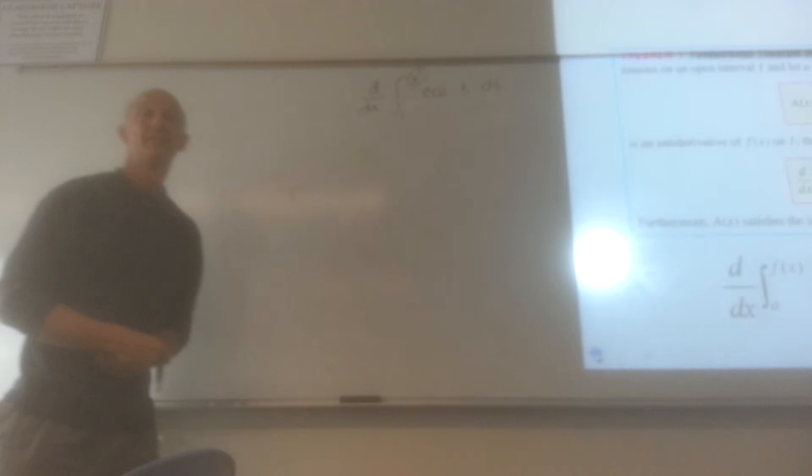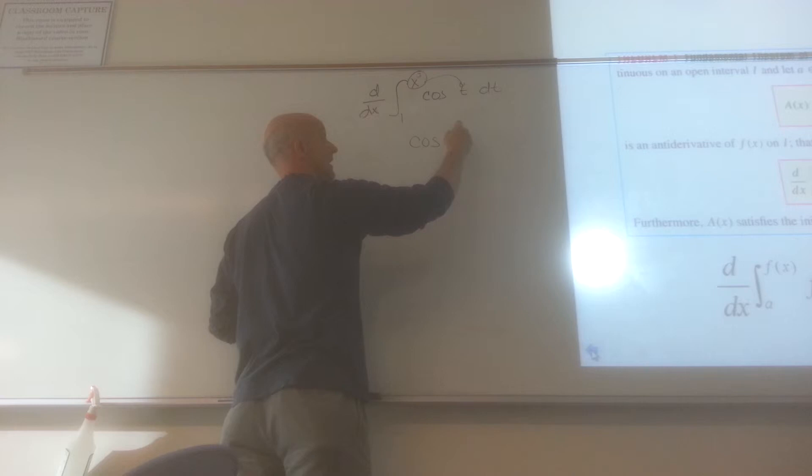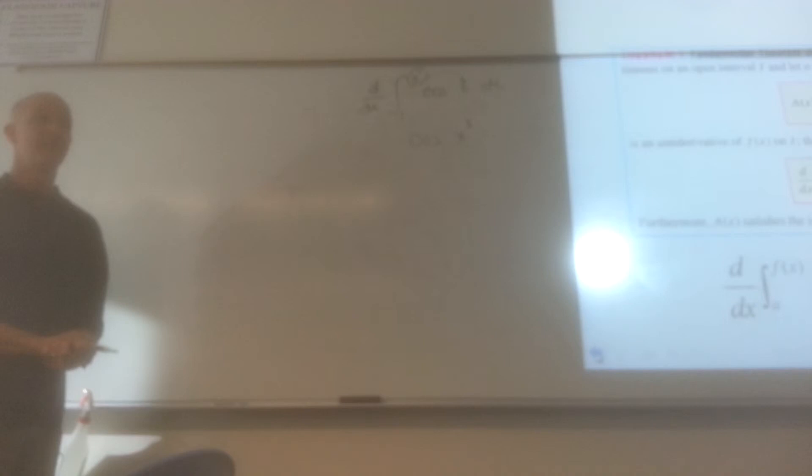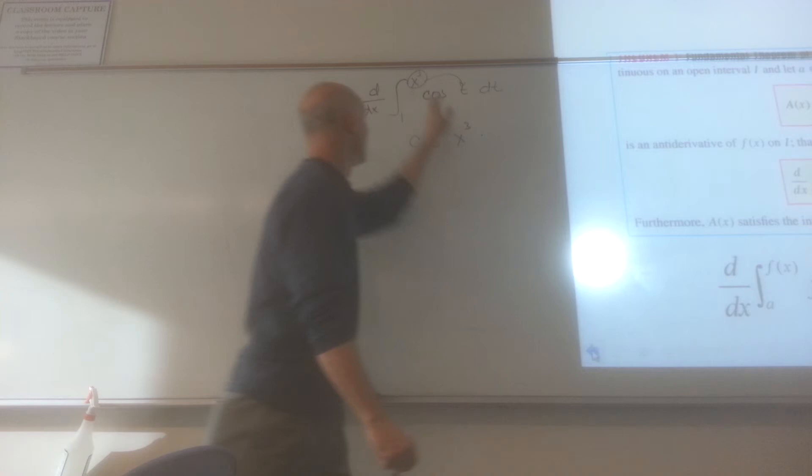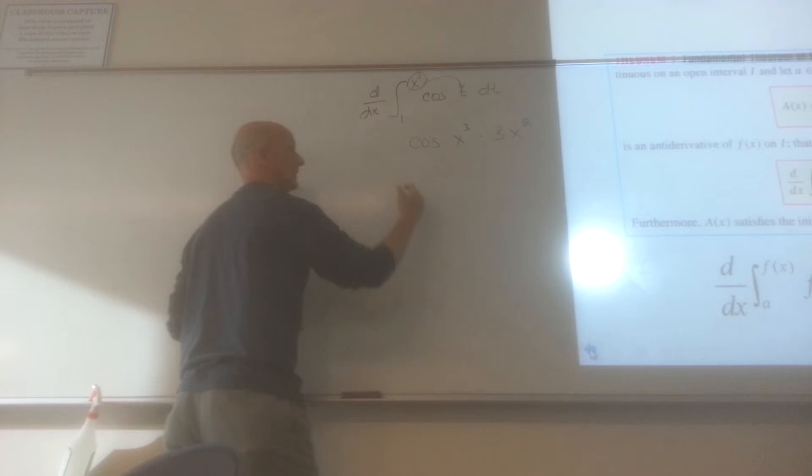Just plug it in. So that would be the cosine of x cubed. However, are we done? Because we did this, but now we have to take the derivative, so times 3x squared. So if we look at it as 3x squared times the cosine of x cubed.